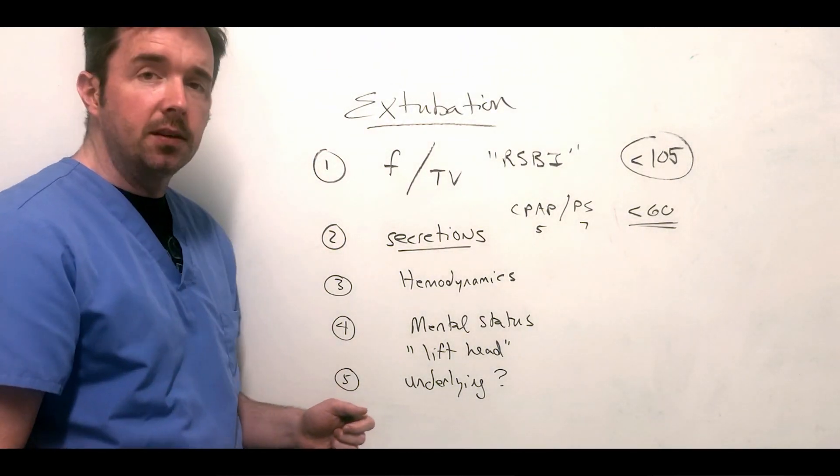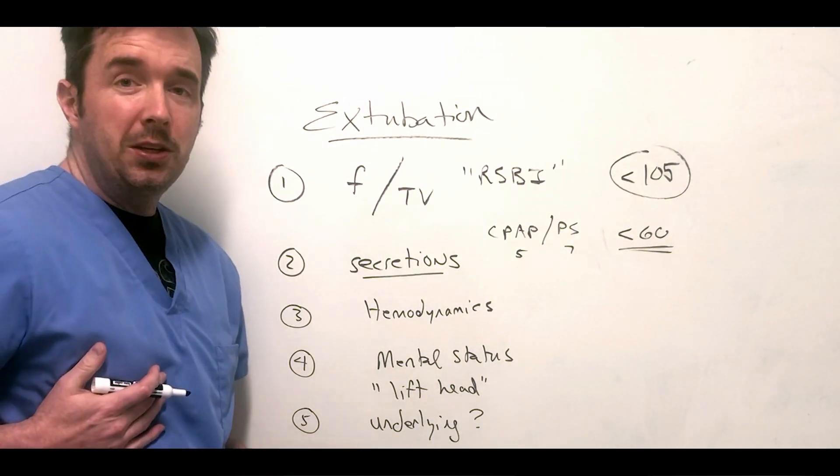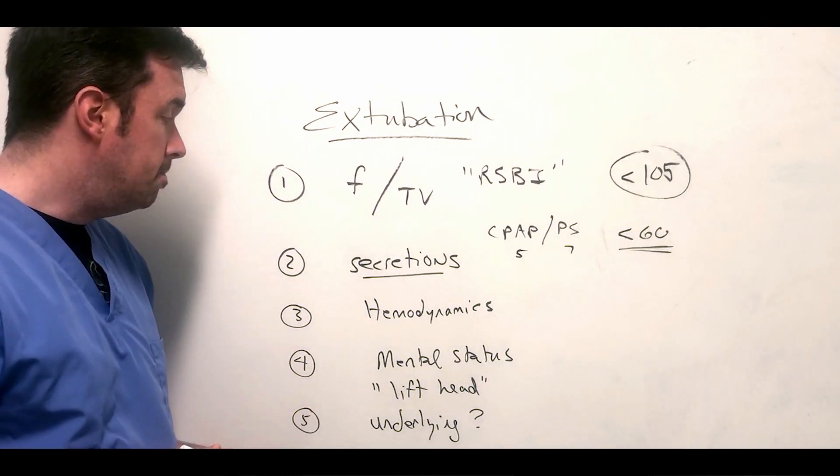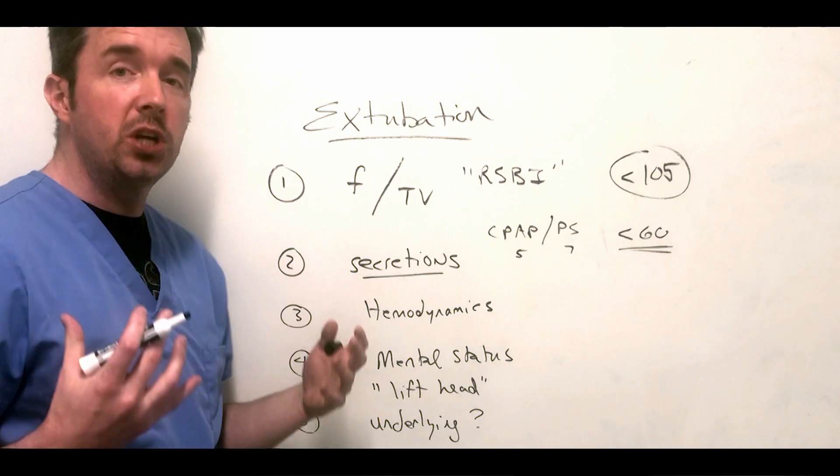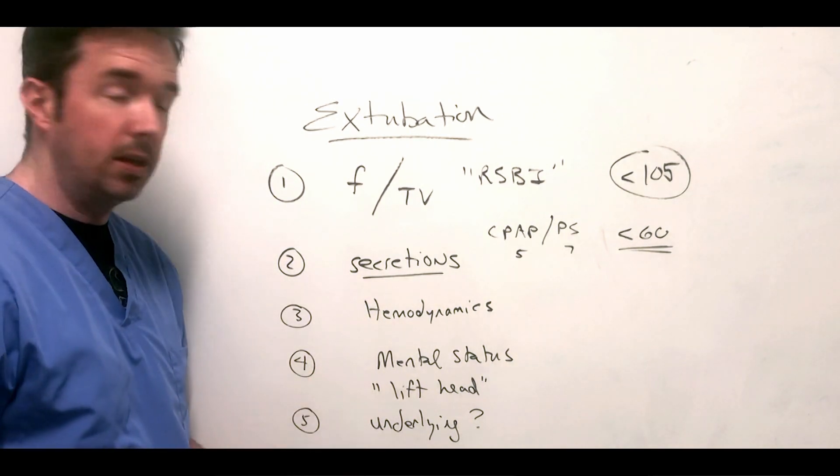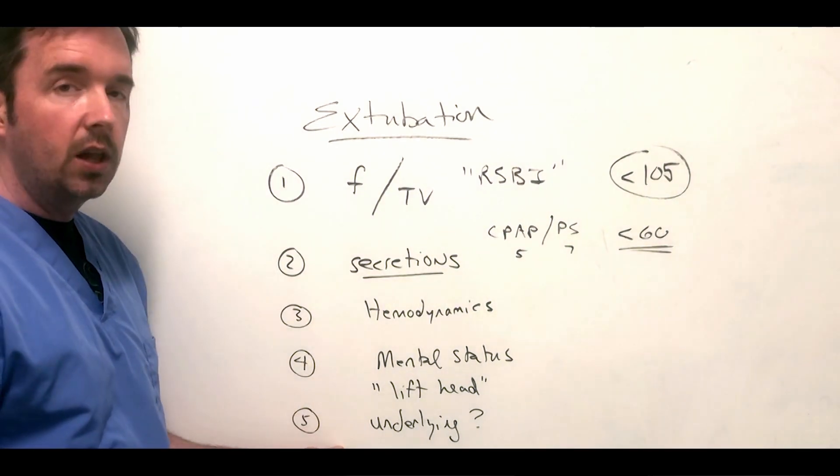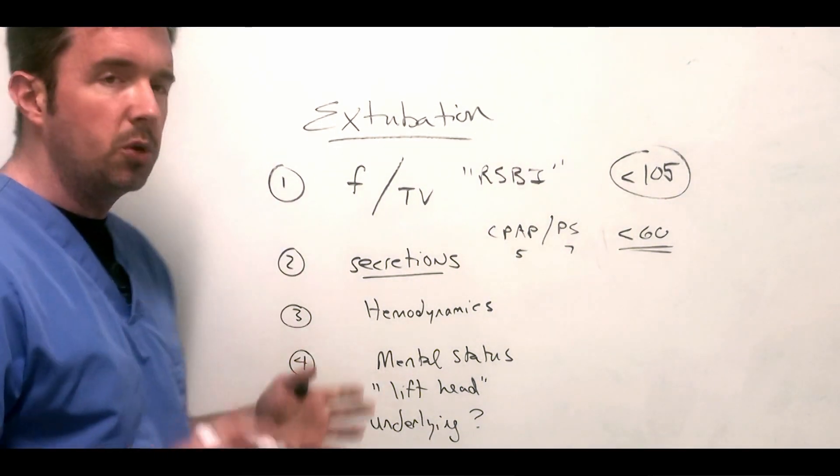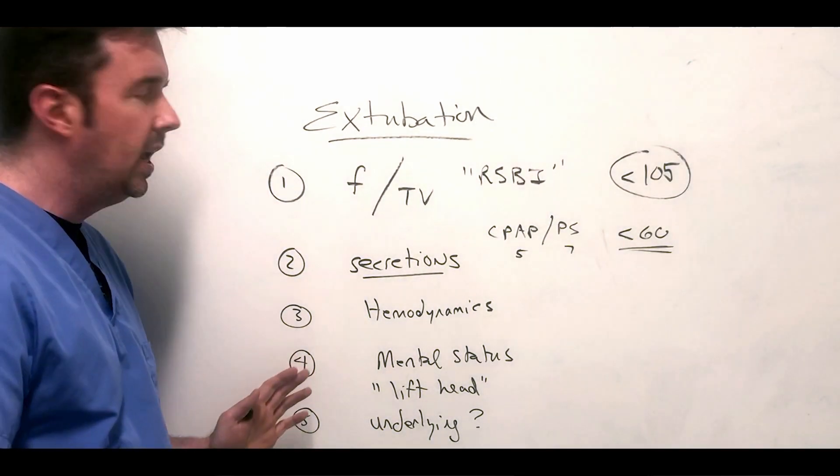Which is: is the underlying issue better? The reason that they got intubated - pulmonary edema, have we diuresed them? Wicked pneumonia requiring antibiotic therapy and clearance - is that better? Is it due to a let's say neurogenic problem like a seizure and they're post-ictal but now they're awake - is that better? Is the underlying condition improved? So as you think through which patient you want to extubate, this is just a quick way - five things to kind of run through in your list.